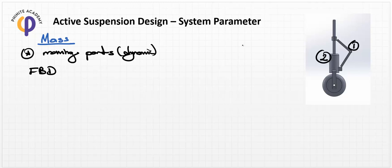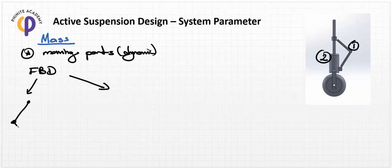We can create the mass parameters as a collection of these two things. The free body diagram can be split into these two parts: we have a link parameter here, and this diagram represents the spring coefficient behavior related to these two links.